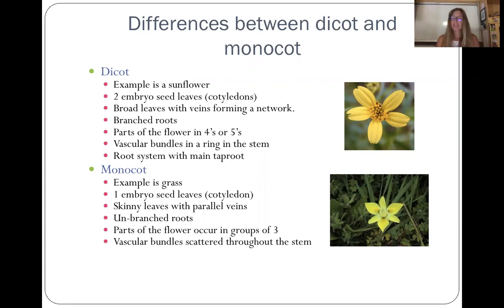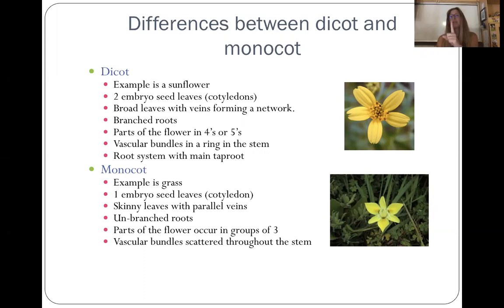A dicot flower or plant — an example is a sunflower. When you plant the seed and it first comes up out of the ground, there are leaves that are going to appear. If one leaf appears, it's a monocot — mono meaning one. If two leaves appear, it's a dicot — di meaning two. So a dicot plant like a sunflower gives you two leaves when that seed first splits. So it's a dicot.